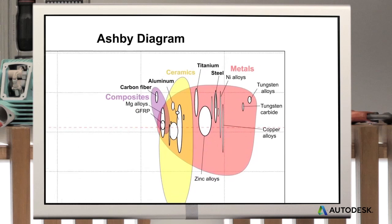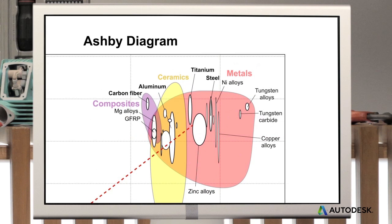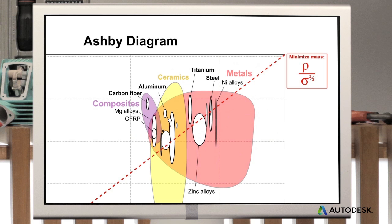To optimize your choice among the remaining materials, you can plot a guideline based on your objectives, constraints, and geometry. In this example, materials on the line perform equally well, and those above the line perform better. So you can see, aluminum, steel, titanium, and carbon fiber could all be good options.